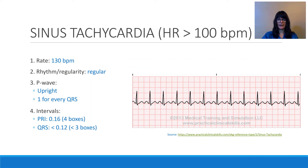Let's look at sinus tachycardia. Tachycardia pertains to when the heart rate is greater than 100. Looking at our six-second rhythm strip, I count my QRS complexes: 1, 2, 3, 4, 5, 6, 7, 8, 9, 10, 11, 12, 13. Multiplying by 10 gives a heart rate of 130, so that certainly applies.